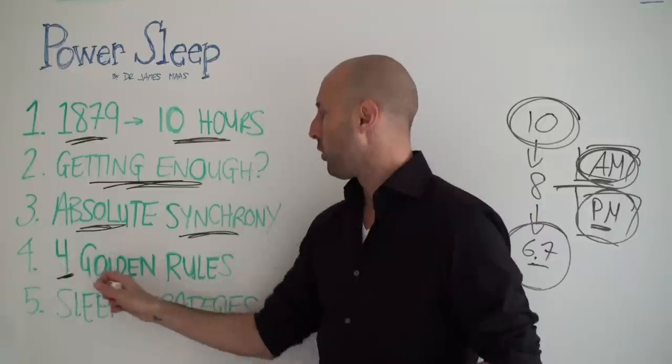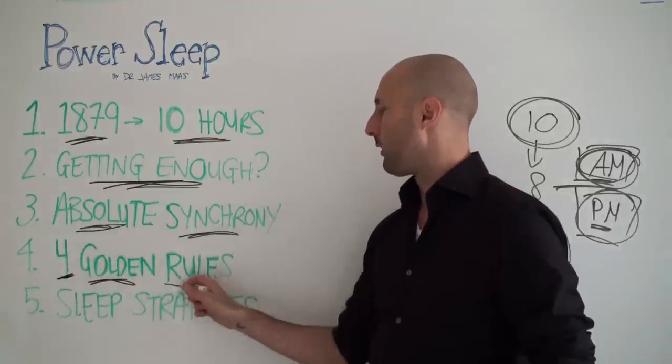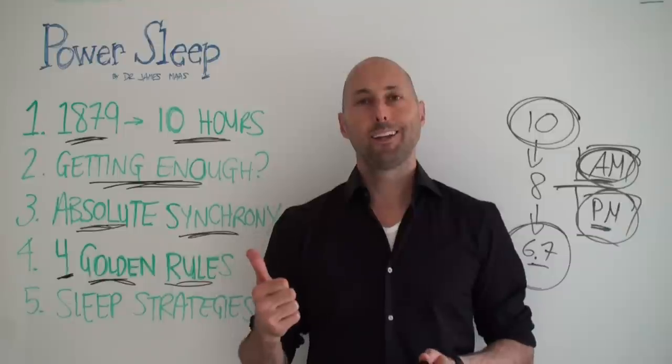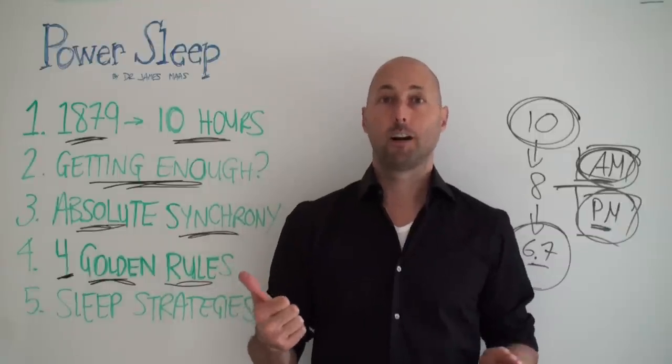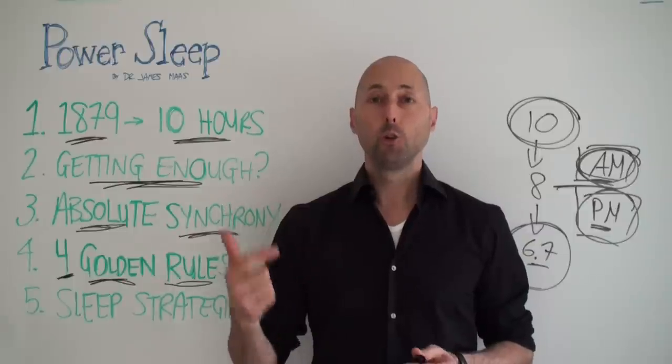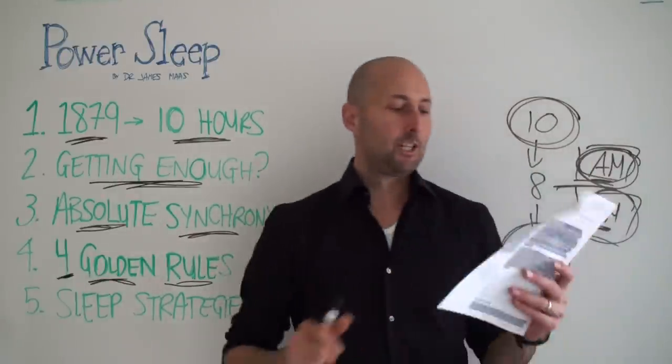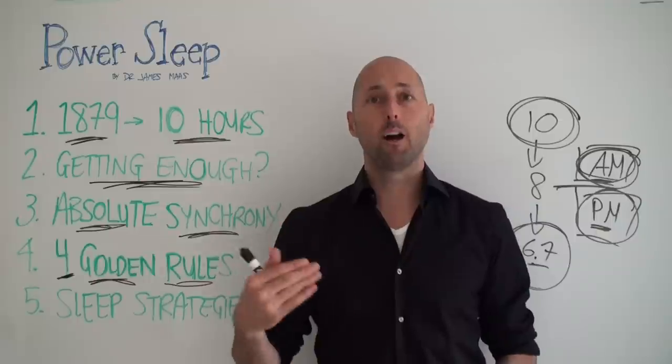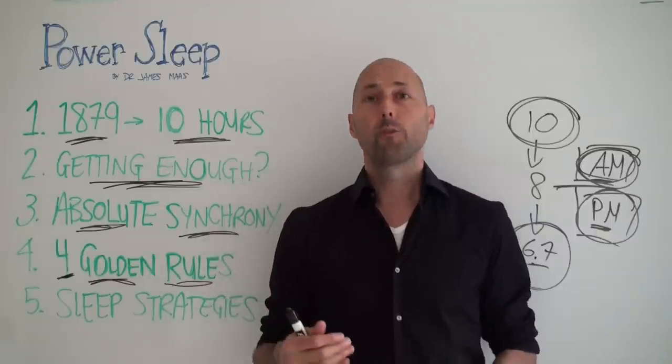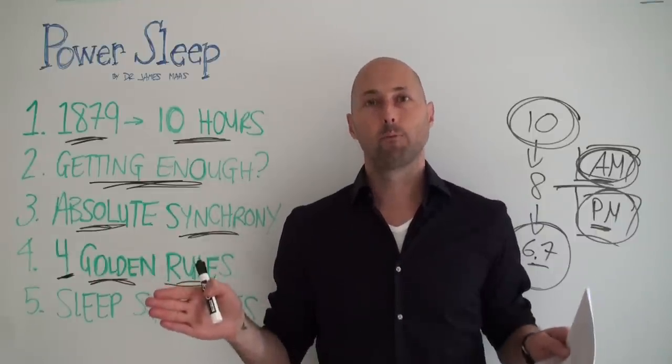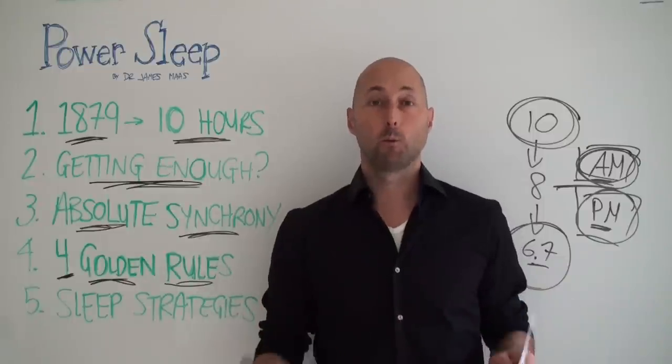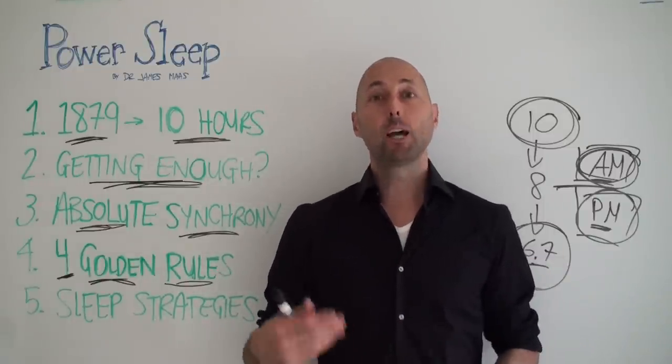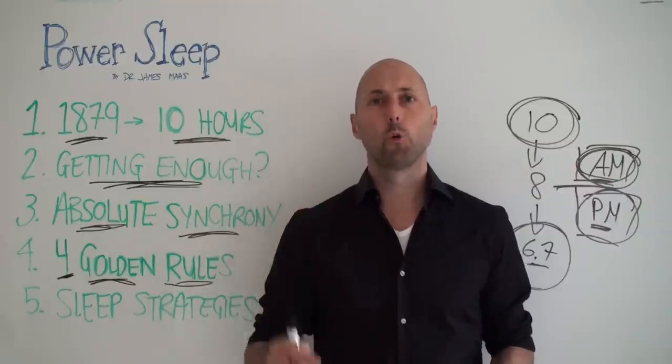We've got four golden rules of power sleep. The four golden rules are: one, get enough. Not complicated, but get enough. Two, we want to get a regular schedule, which is what we just talked about, absolute synchrony. We want to get enough. We want to make it a regular schedule. Three, we want continuous sleep. We want to have one long chunk of sleep. We can also supplement that with naps. And four, we want to make up for lost sleep. Those are our four golden rules.